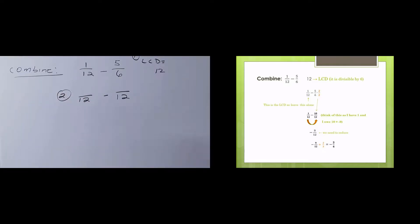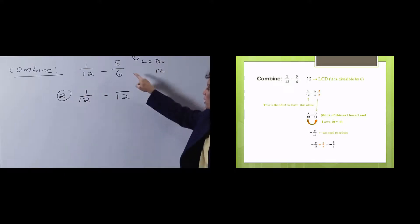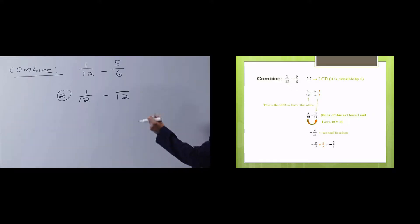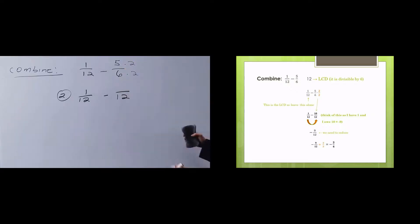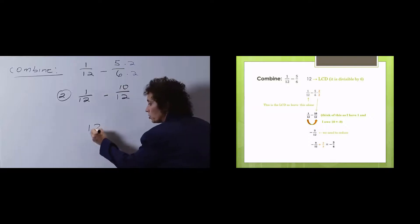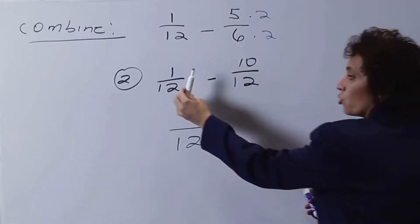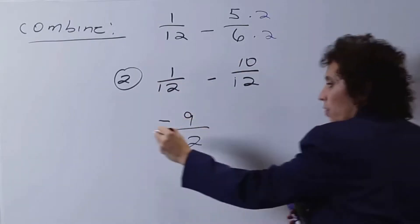This already has a denominator of 12, so I can leave it alone — if it's not broken, don't fix it. This does not have a denominator of 12, so I'm going to make it have a denominator of 12 — I'm going to build the fraction. I have to multiply 6 by 2 to get 12, so I have to multiply 5 by 2, because the only thing we're allowed to do is multiply a fraction by 1 — some form of 1. And we get 10 twelfths. Now we just combine — the denominator stays the denominator. I have 1, I owe 10, so I owe 9. That's step 3.